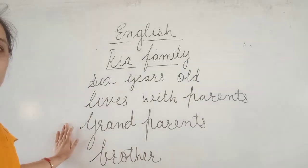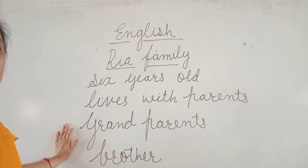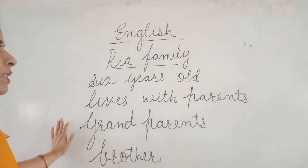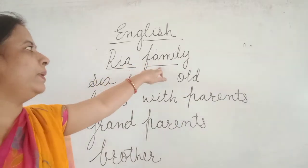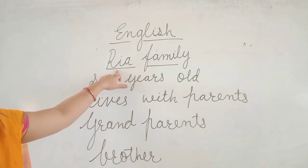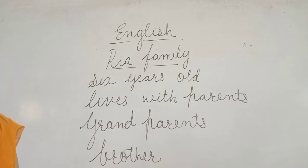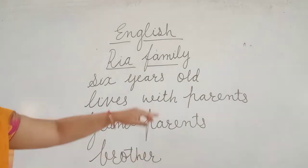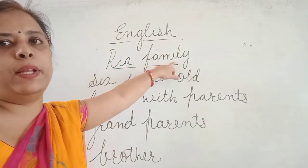These are some words which will help us to read the lesson. So we will revise these words. This word will help to read the lesson: Riyadh's family. R-I-A, Riyadh's family. F-A-M-I-L-Y, family.